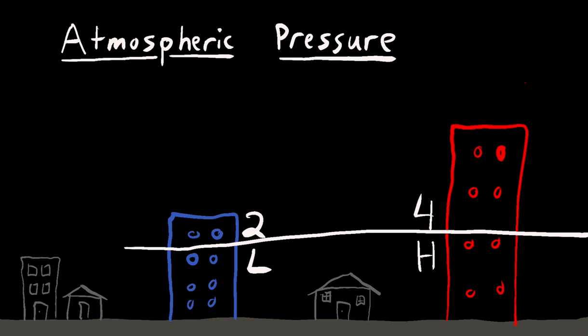Now the atmosphere doesn't like to be in an imbalance like this. So what it's going to do is try to turn that four into a three and turn that two into a three. So that is going to lead to some of these air molecules on the right moving over to our column on the left. And that is what we call wind.